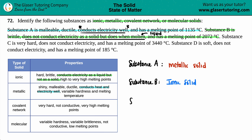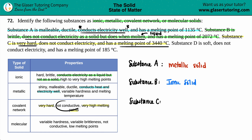Okay, substance C. Substance C is very hard, does not conduct electricity, and has a melting point of 3,440 degrees Celsius. The key here is that it's super hard and has a very high melting point — 3,440 is way higher than the other two melting points. It doesn't conduct electricity either. Looking at the properties — very hard, very high melting point, does not conduct electricity — this one has to be a covalent network solid.